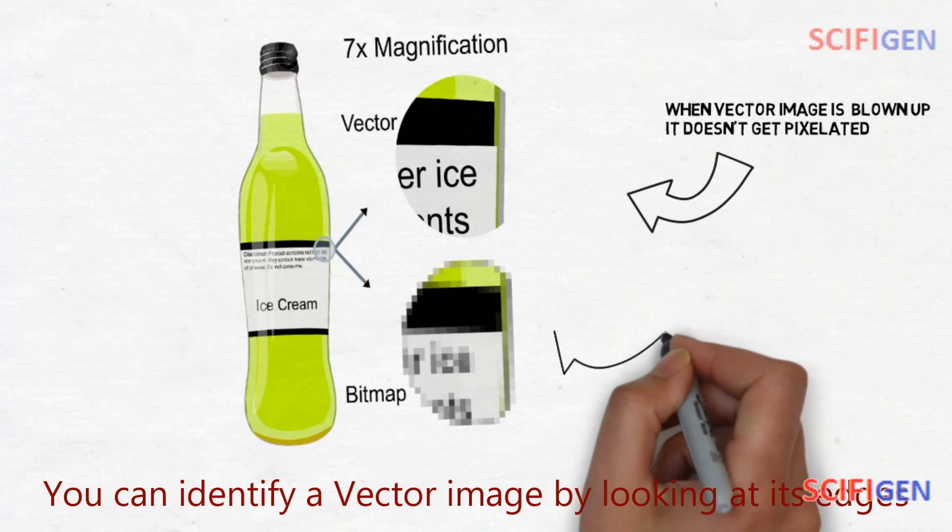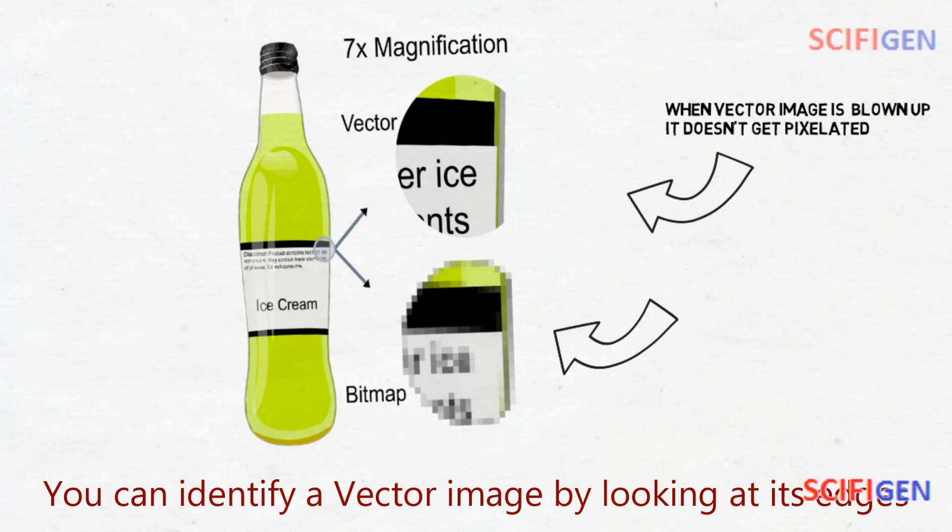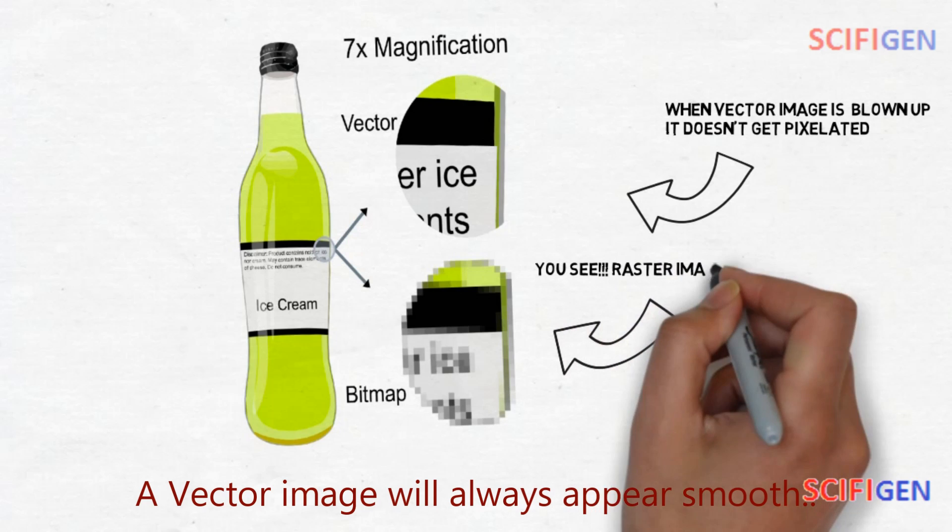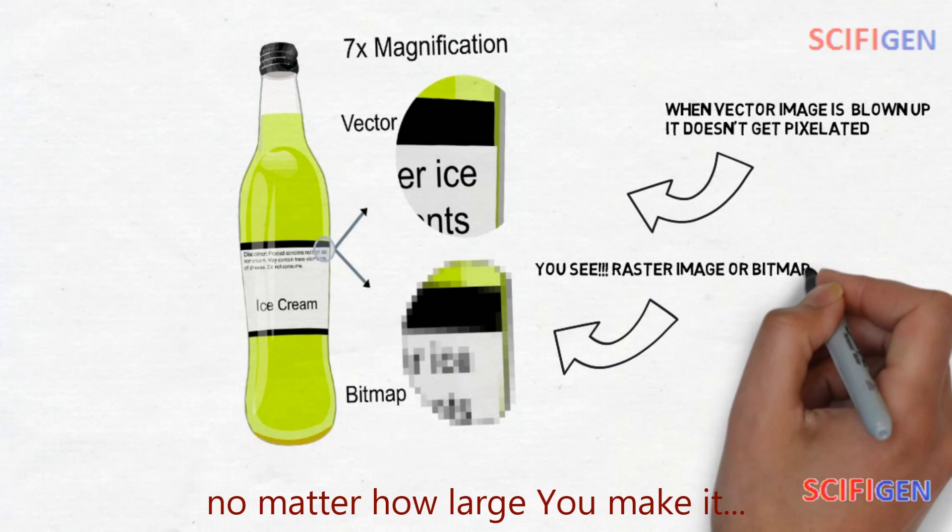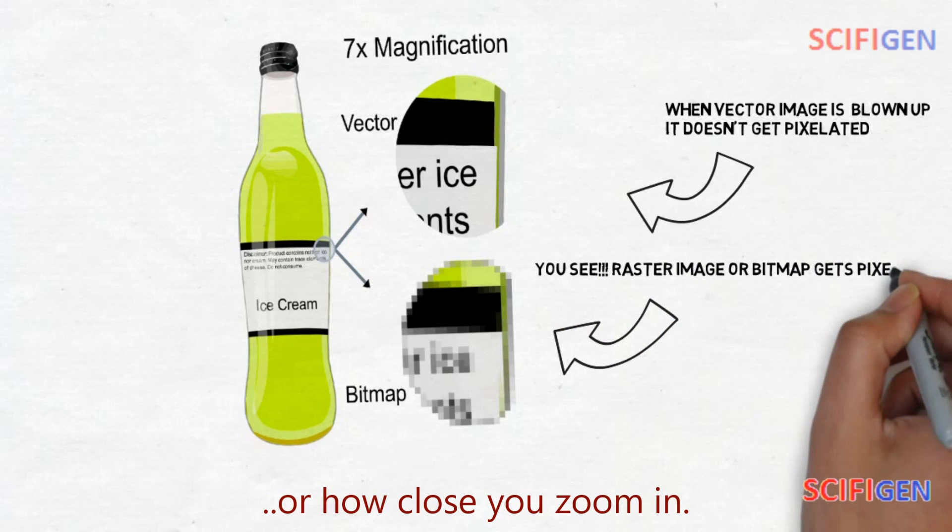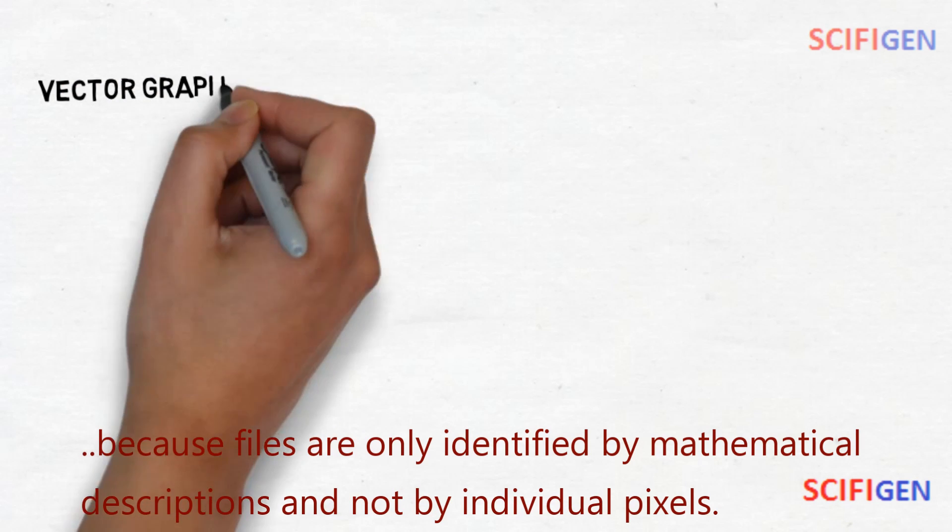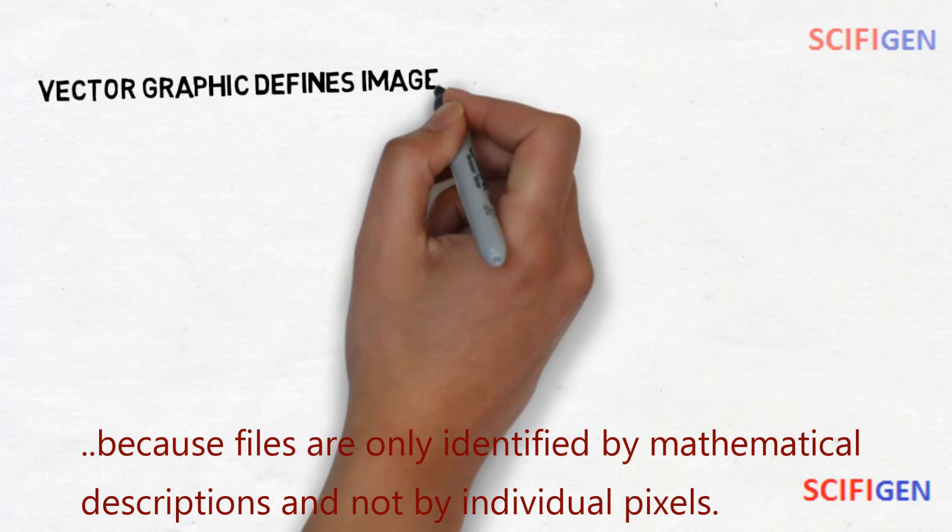You can identify a vector image by looking at its edges. A vector image will always appear smooth, no matter how large you make it or how close you zoom in, because files are only identified by mathematical descriptions and not by individual pixels.